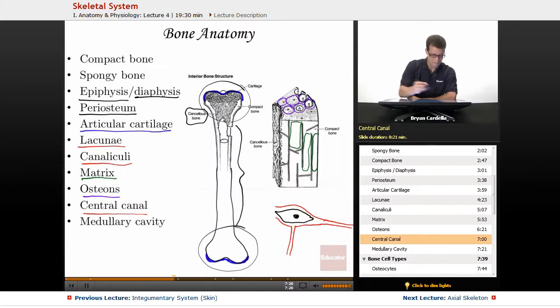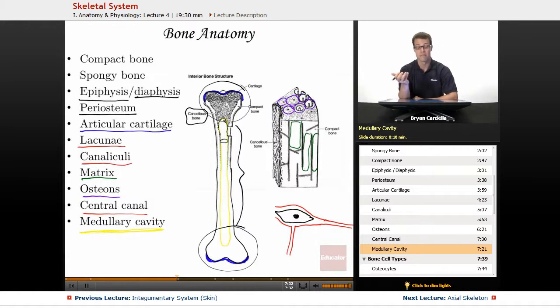And then finally, medullary cavity. The word medulla means inner. So medullary cavity, this region within the middle here that's hollow, is the medullary cavity. There you're going to have a lot of bone marrow.